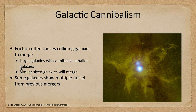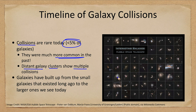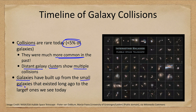Looking at the timeline of galaxy collisions: collisions are relatively rare today, occurring in less than 5% of galaxies. They were much more common in the past. Distant galaxy clusters sometimes show multiple collisions going on, as seen in Hubble Space Telescope images showing a variety of galaxies — some with relatively small amounts of interaction, others showing significant distortion. Galaxies have built up from those small blue galaxies that existed long ago to the larger spiral and elliptical galaxies we see today.